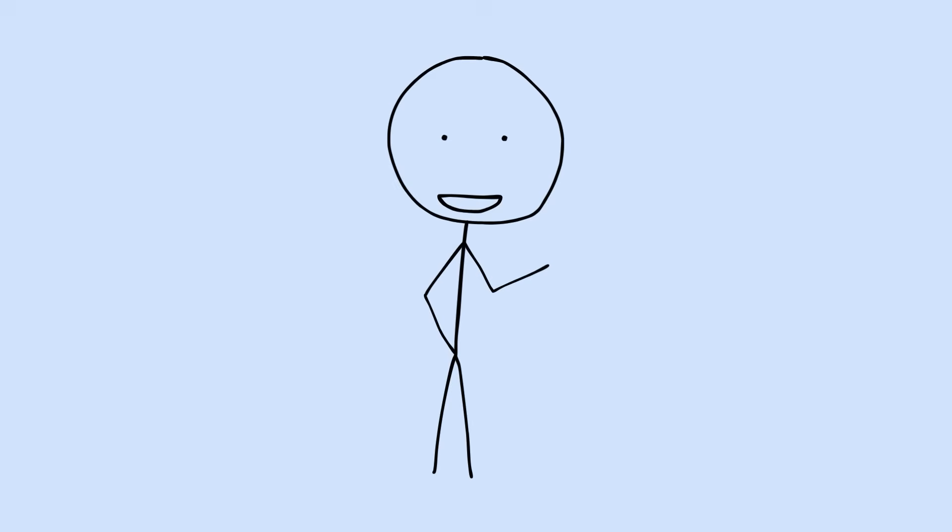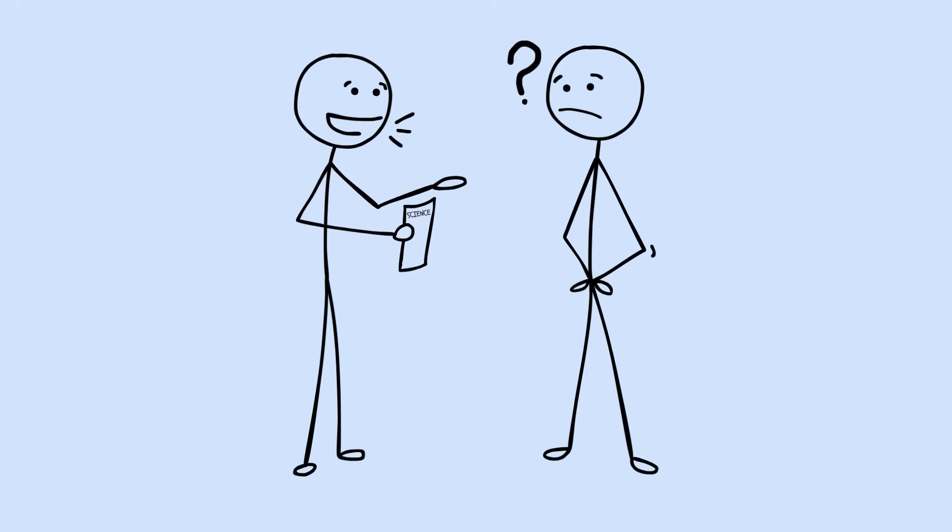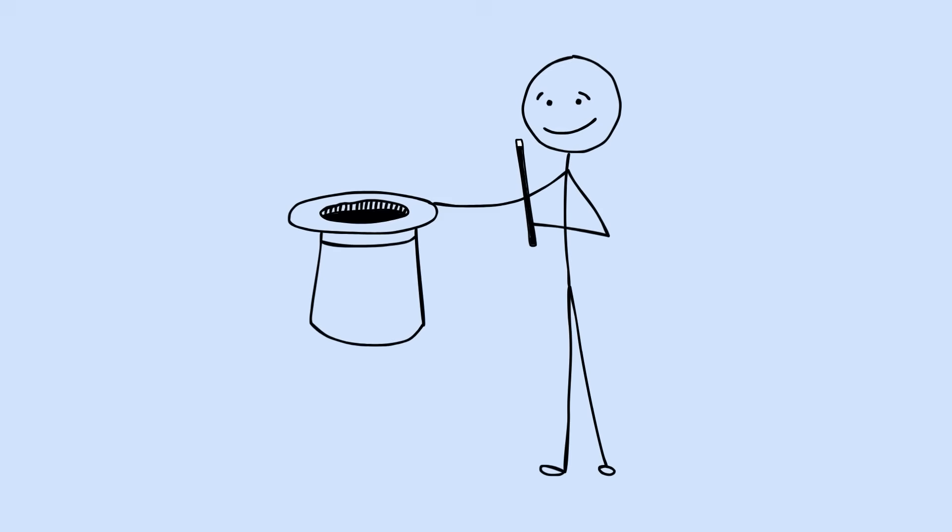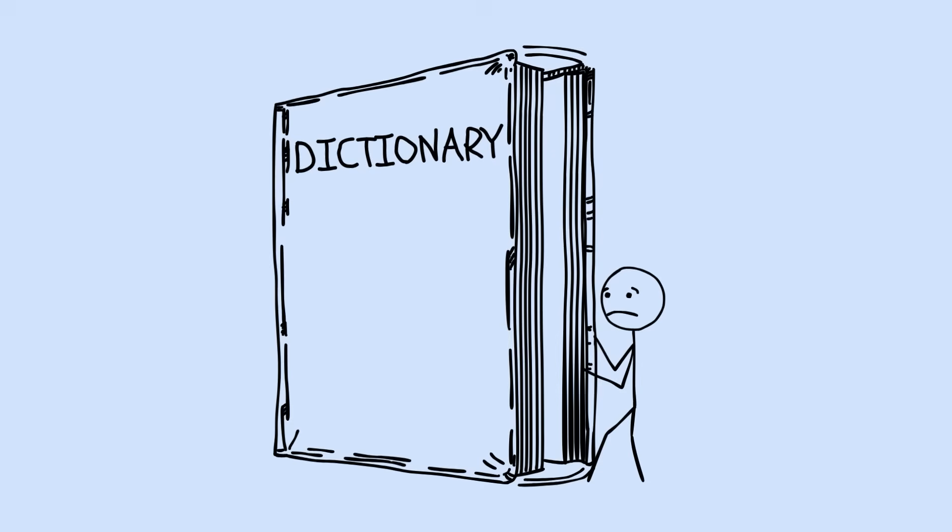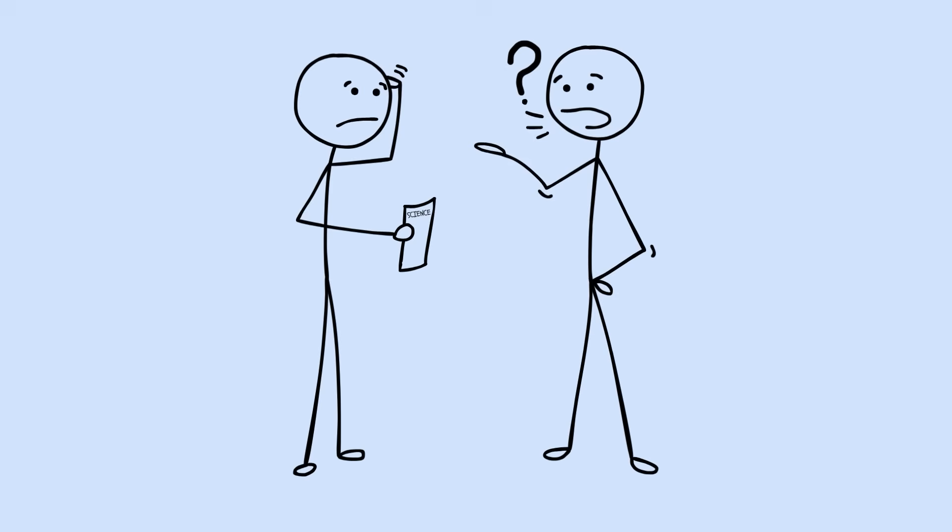Here's exactly how it works. Pick a concept you're studying. Imagine you're teaching it to someone who's never heard of it before. Use simple words. No jargon. No shortcuts. Something magic happens in the struggle. When you can't find simple words to explain something, you've found exactly where your understanding breaks down. Teaching reveals what you don't know.